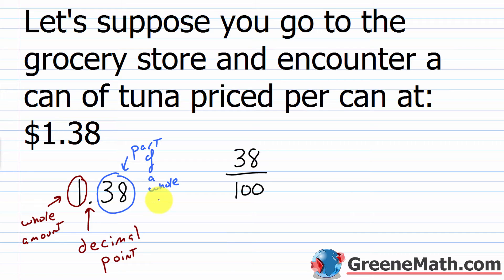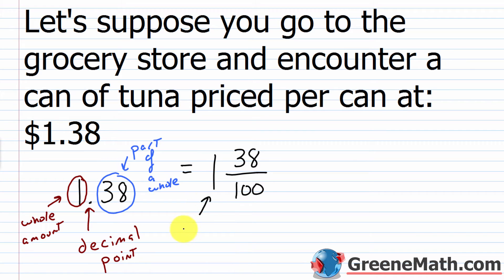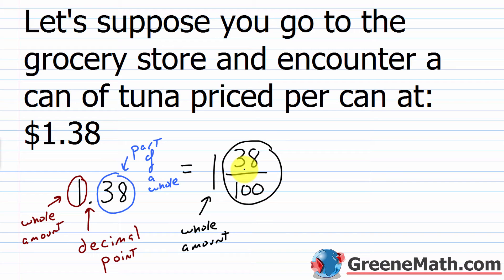We can already see that 1.38 is the same as 1 and 38 hundredths — these are actually the same. With the decimal, you have a whole amount and then part of a whole. With the mixed number you have the same thing: a whole number part, and then your fractional amount — 38 parts out of 100.